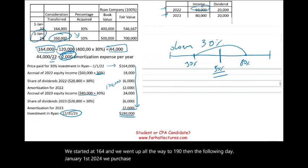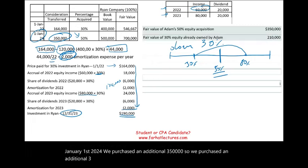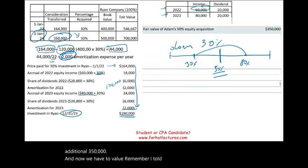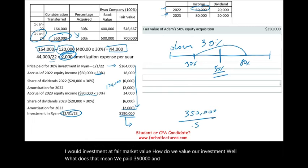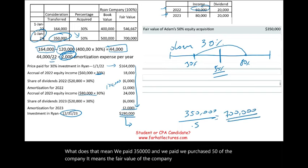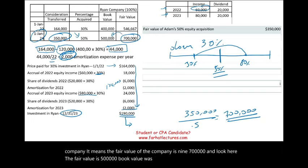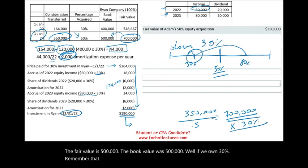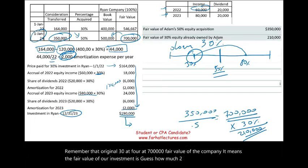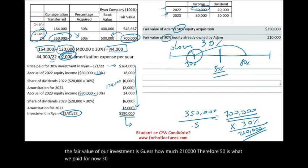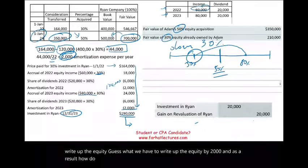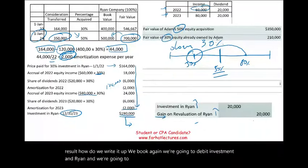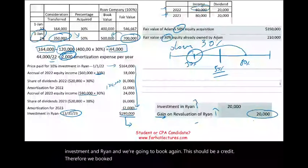On January 1st, 2024, we purchased an additional 50% for $350,000. We now need to value our old investment at fair market value. We paid $350,000 for 50% of the company, meaning the fair value of the whole company is $700,000. If we own 30% of a company worth $700,000, the fair value of our original investment is $210,000. Our books showed $190,000, so we write up the equity by $20,000, debiting investment in Ryan and booking a gain of $20,000 — increasing our investment to $210,000.